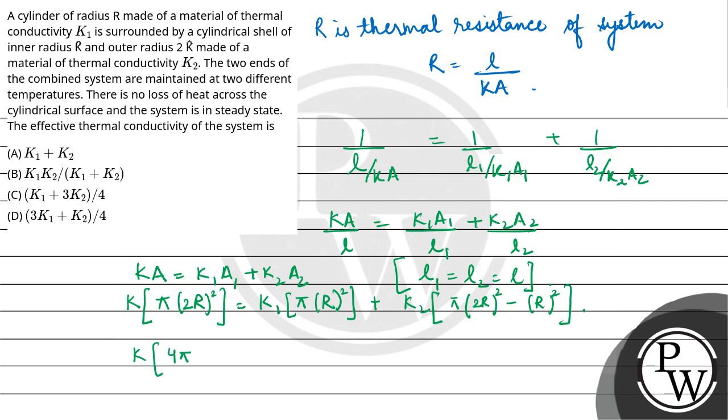Solving this, we get K times 4 pi R squared is equal to pi R squared times K1 plus K2 times 4 pi R squared minus pi R squared. Pi R squared cancels on both sides, so 4K is equal to K1 plus 3K2. Therefore K is equal to K1 plus 3K2 upon 4.